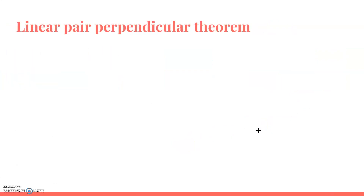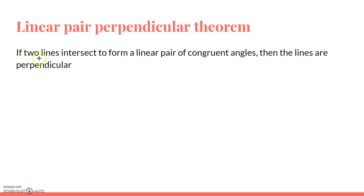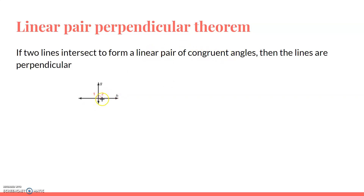Now, the linear pair perpendicular theorem: if two lines intersect to form a linear pair of congruent angles, then the lines are perpendicular. As you can see here, these two angles are congruent. Since the linear pair creates a pair of congruent angles, lines G and H are perpendicular.